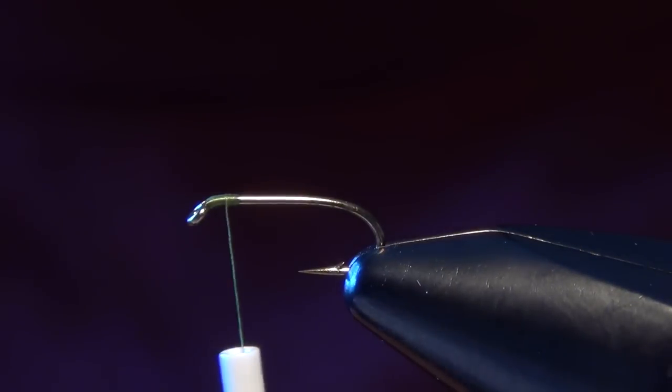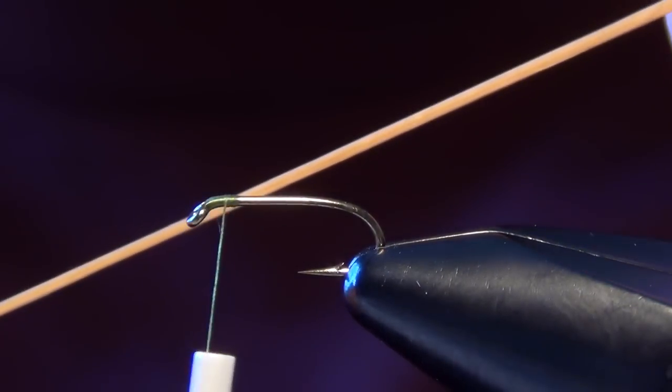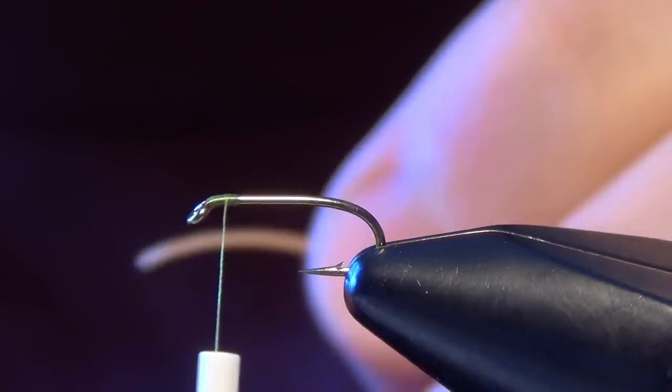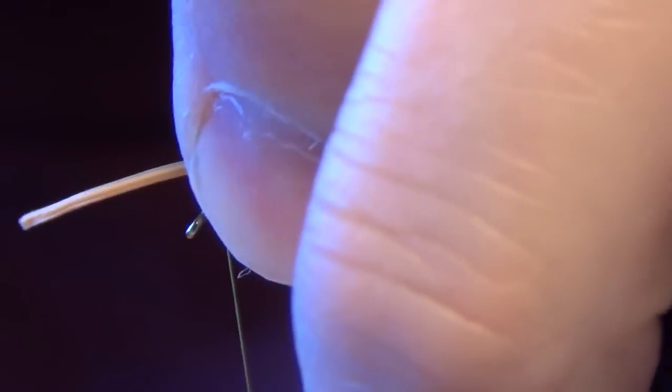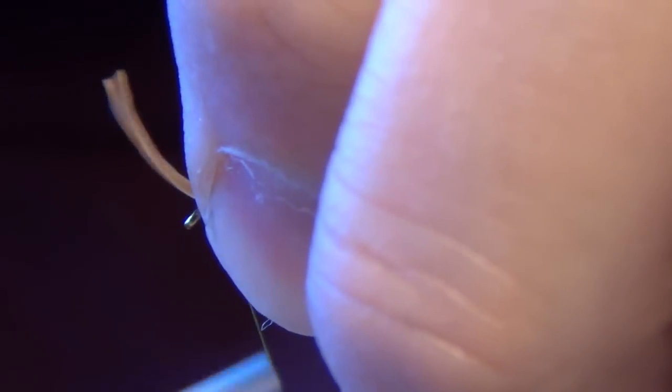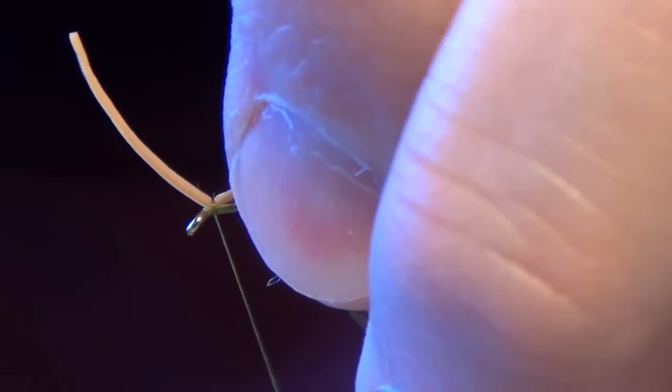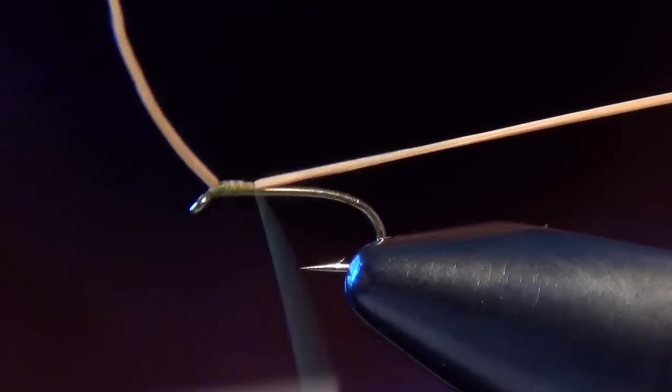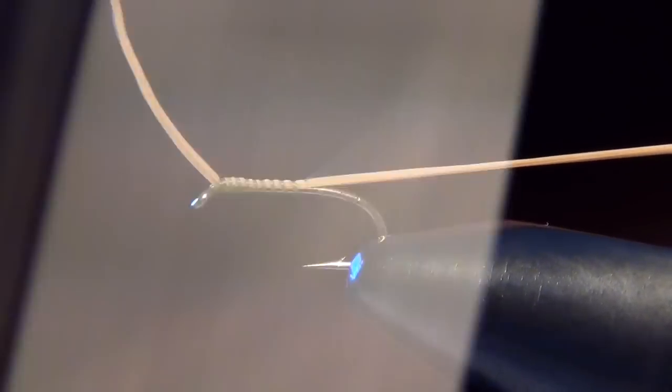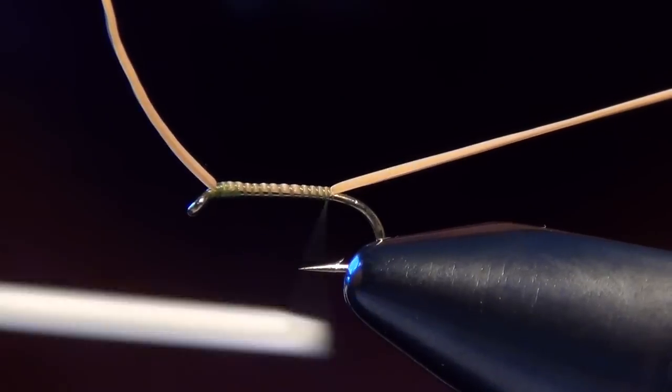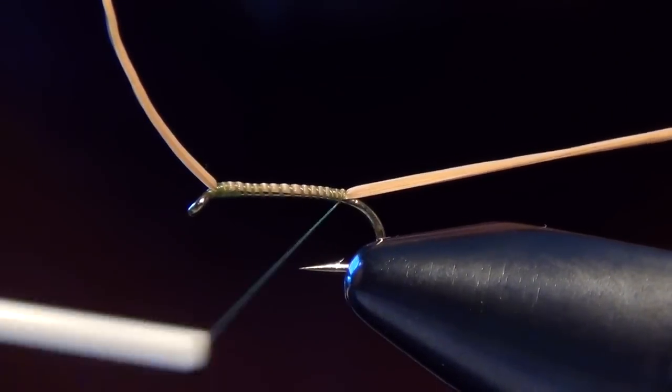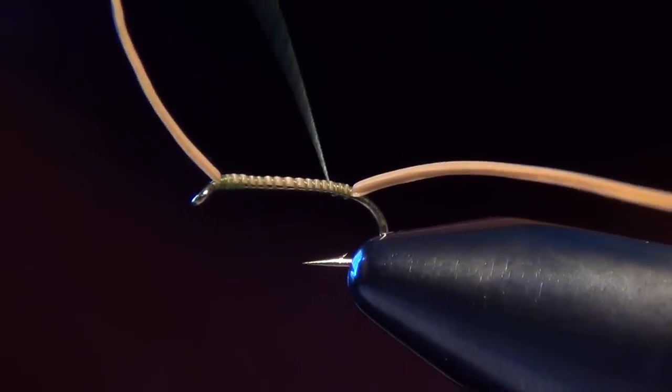We're going to start with some Veevus 14-0 or 12-0 thread and some ginger colored Lifeflex for this color. I'm just going to take that Lifeflex and tie it in right up at the head of the fly. I'm going to continue with that strand all the way down the shank of the hook, all the way to the bend. We're just going to use that for the tail as well.